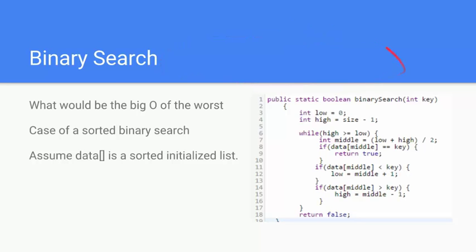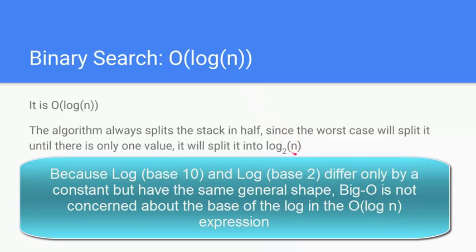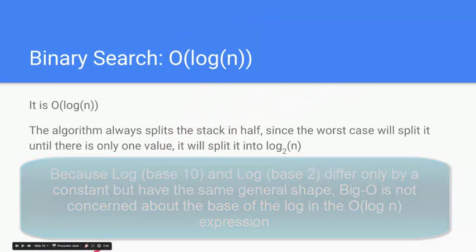So what would be the worst case scenario? You can try it with a sample array or you can just kind of think about it. The big O of this one is O of log n. Now since it always splits the stack in half and the worst case will split it until there's only one value, it will only split it until there's log base 2 of n. Even though it's log of n, log base 2 of n, it's still written as log of n as it's logarithmic. It's still growing in this logarithmic shape.